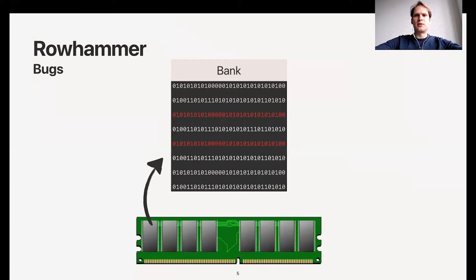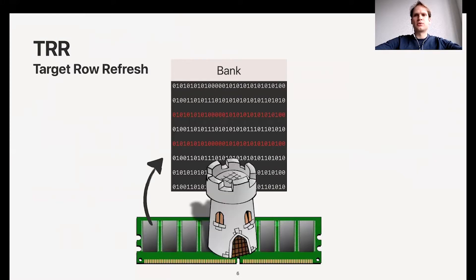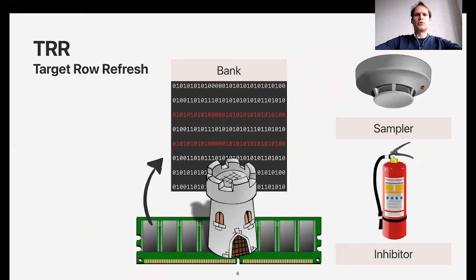As a result, we might flip a bit in one of the middle rows. So what does TRR do? It introduces two new components: a sampler and inhibitor. Basically they try to detect the fires that the attacker is starting, and then the inhibitor takes action and refreshes this row to prevent a bit from flipping.